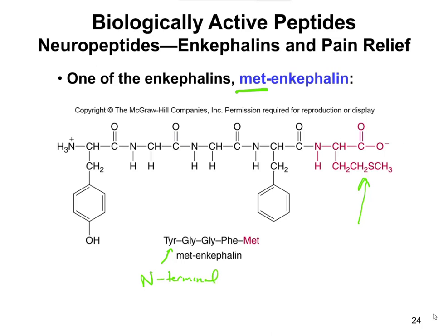Amino acids are always written from N-terminus on the left to C-terminus on the right — that's just a common designation. So if we're trying to identify these residues, this right here would be your tyrosine. Then you would have two glycines in a row — here's one glycine, and here's another glycine.